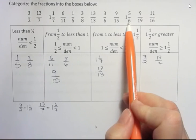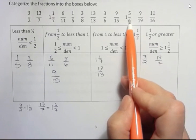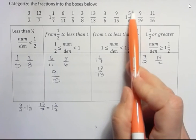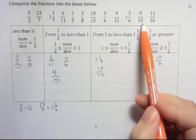1 and 5 sixths. Well, 5 sixths is almost another whole, right? So it definitely goes here. It's greater than half. Half of 6 would be 3. This is more than half of 6. So it's more than 1 and a half.